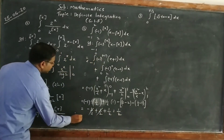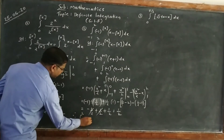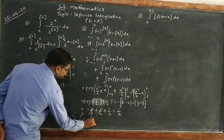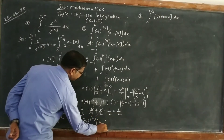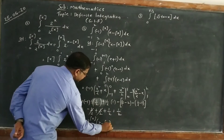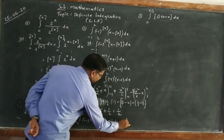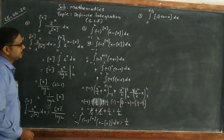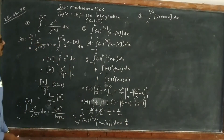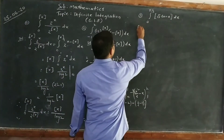Therefore, the integral from -1 to 2 of (-1)^[x] times (x - [x]) dx equals 1/2.